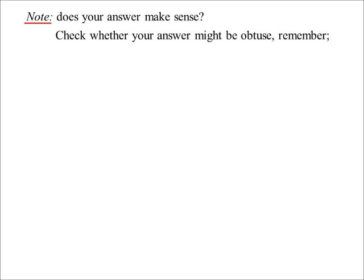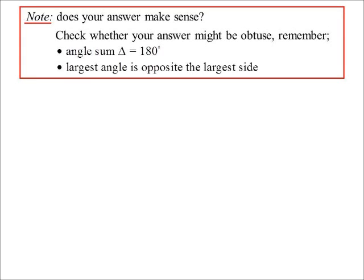So you've got to check things like, I know the angle sum of a triangle is 180. So could this possibly be an obtuse angle? Other thing to keep in mind, I always know that the biggest side will always be opposite the biggest angle. The smallest side will be opposite the smallest angle. And so that's another way we can check to see, could this be an obtuse angle?